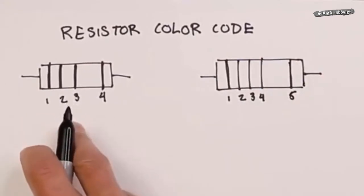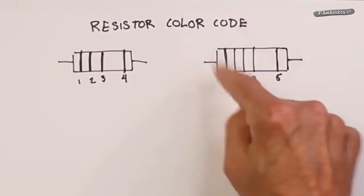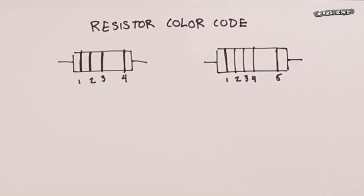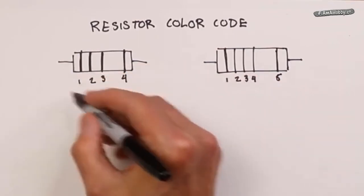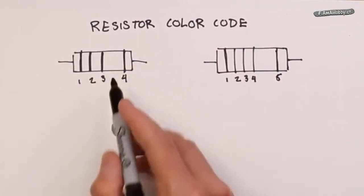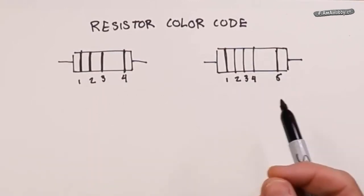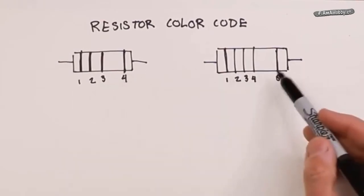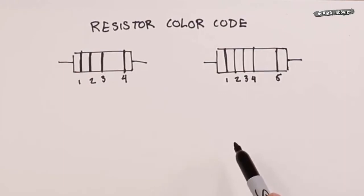This is standard for 20%, 10%, and 5%. The four-band version is precision, so we're talking 1% or tighter. The first thing we have to understand is the way this is structured. The first two, or in this case the first three, are going to give us the precision digits. Then the last one, this third or fourth, will tell us the power of 10 associated with it. And the very last one, the one that's separated over here, will tell us what the tolerance bands are.